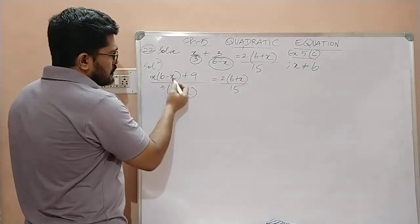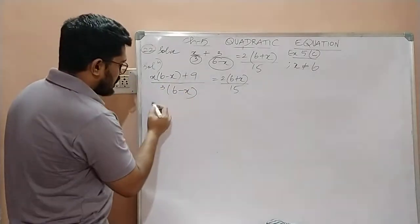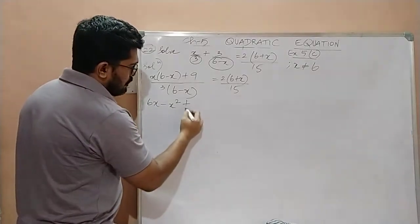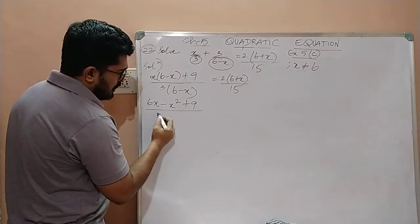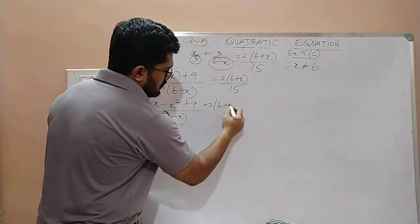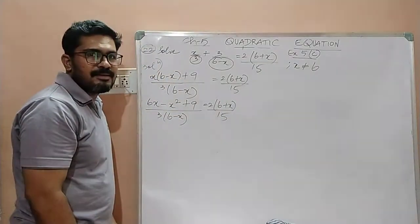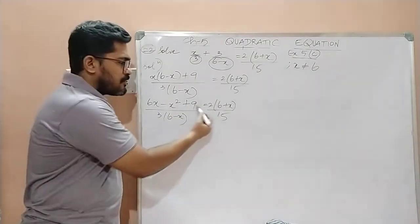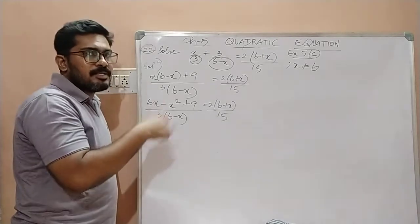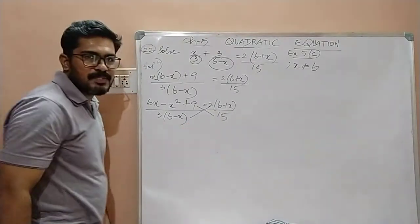Now, here we have x into 6 minus x plus 9. Shall we simplify this numerator? So x into 6 minus x will become 6x minus x square plus 9, whole divided by 3 into 6 minus x, is equal to 2 into 6 plus x divided by 15. Now, children, this is forming A by B is equal to C by D format. So in that case, what we do? We just cross multiply both the sides.